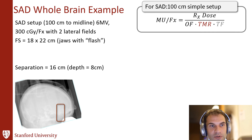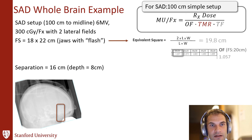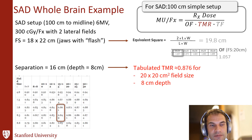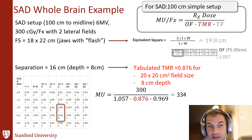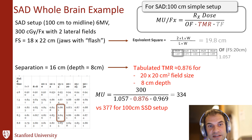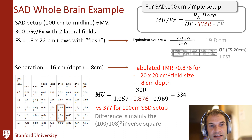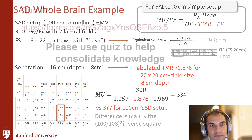Going through the same whole-brain example with SAD setup: we center the midline of the brain at 100 cm from the source. Same equivalent square, same field size — just look up the TMR instead of the PDD. Plugging in, we get 334 monitor units, compared to 377 for the SSD 100 setup. Why is it lower? Because with the SAD setup, the patient is 8 cm closer to the radiation source. Being 8 cm closer means the dose rate — the dose per monitor unit — is higher, so we need fewer monitor units.